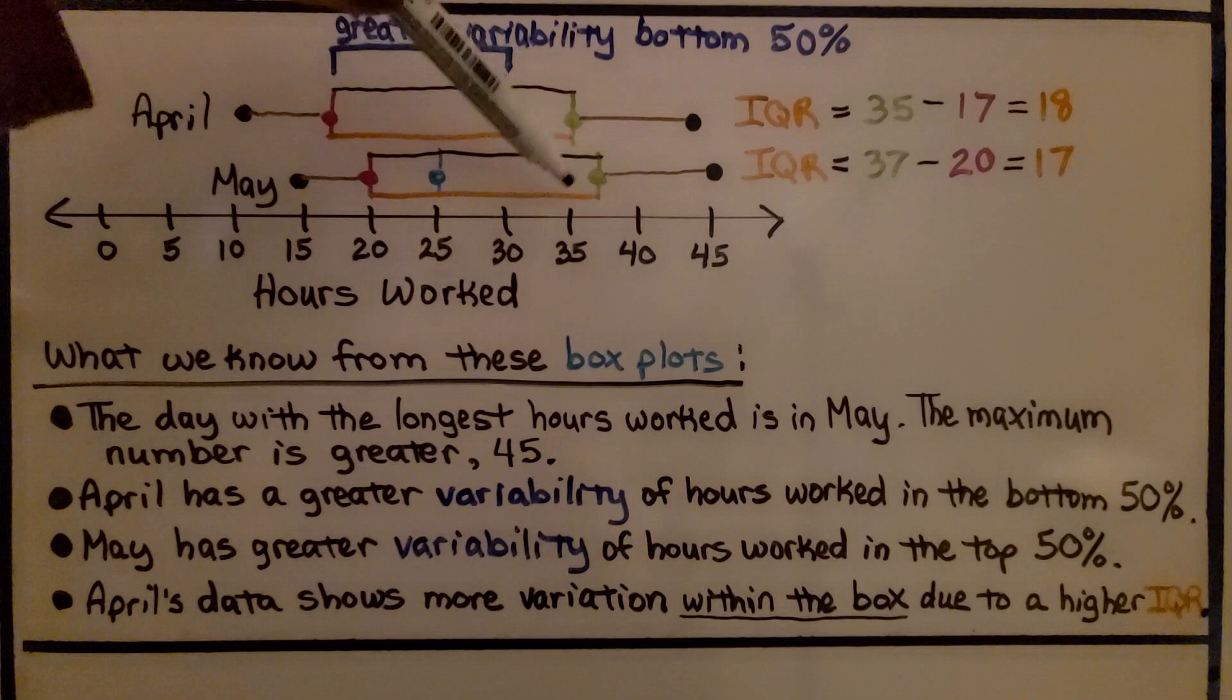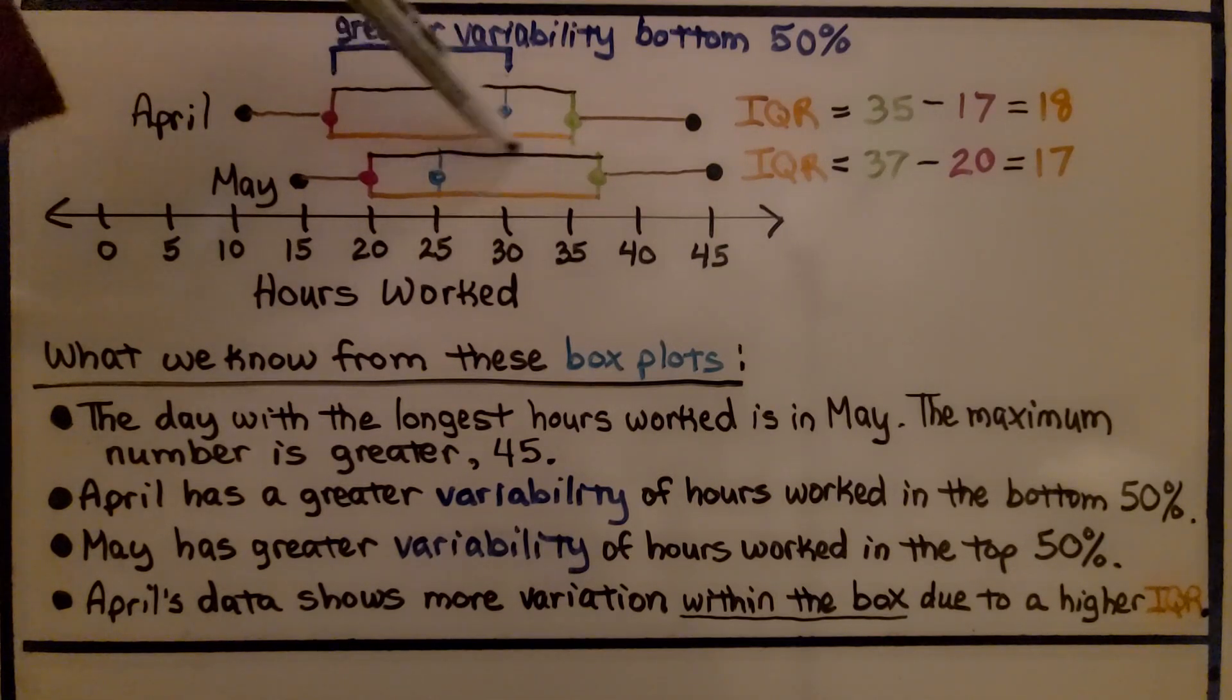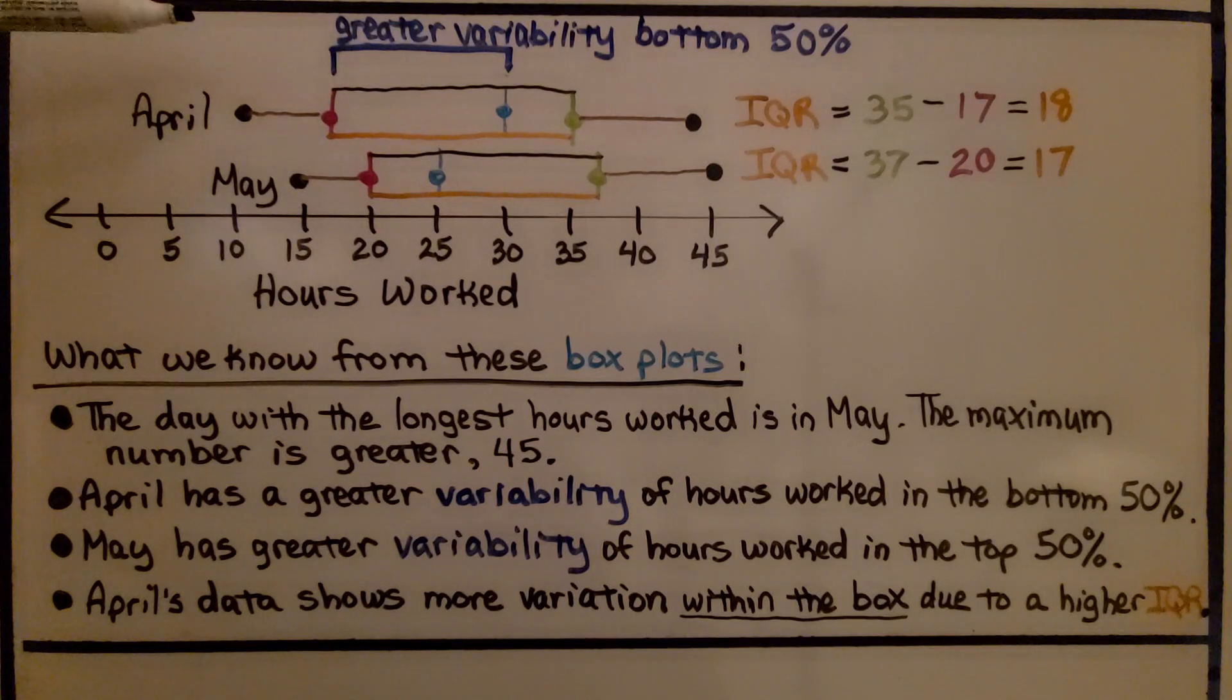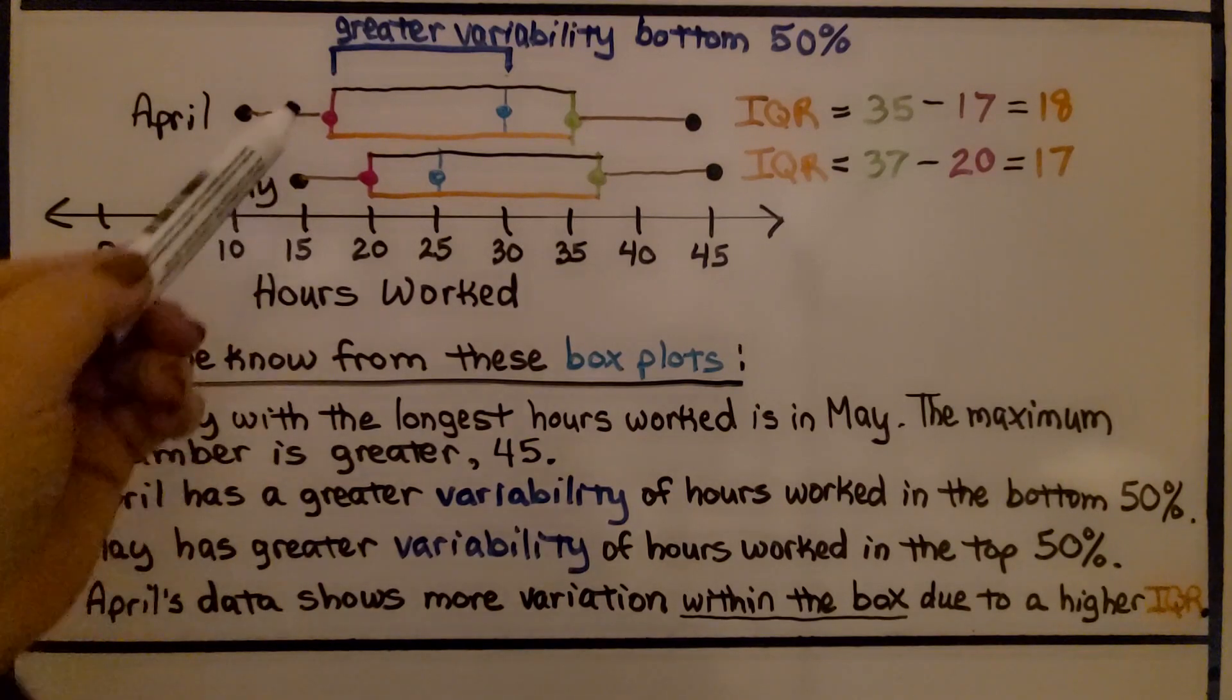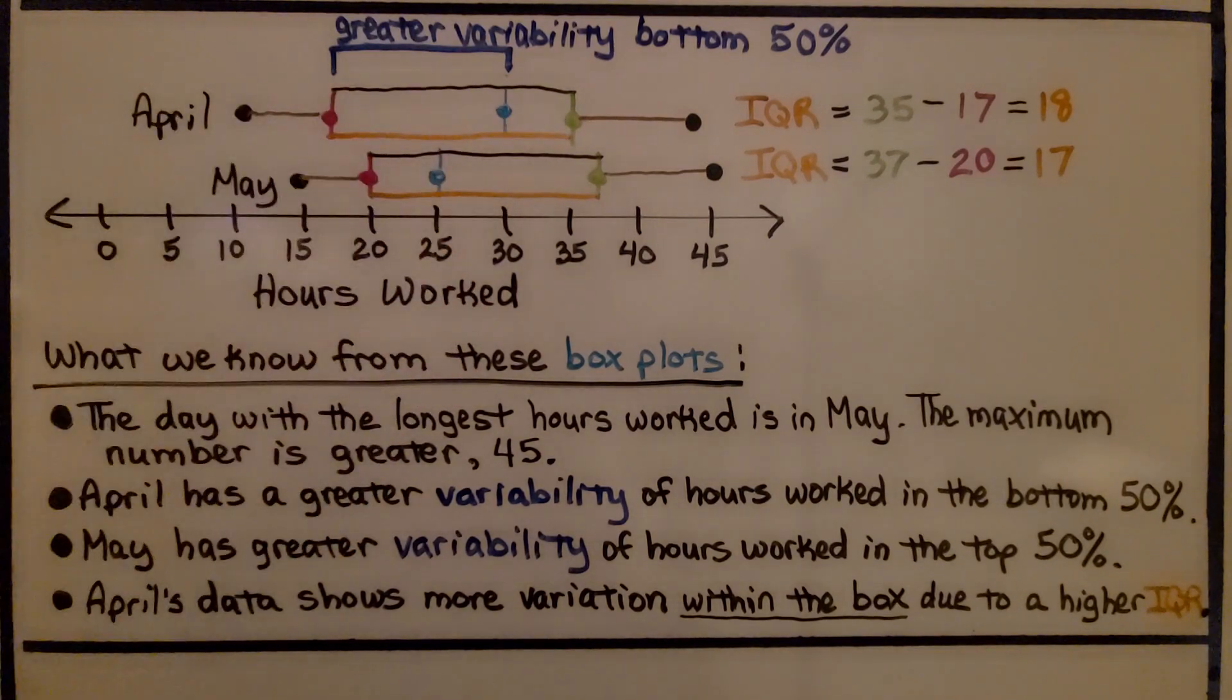And May has greater variability of hours worked in the top 50%. And April's data shows more variation within the box due to a higher IQR. The length of the box is longer. So that means the data shows more variation within the box.